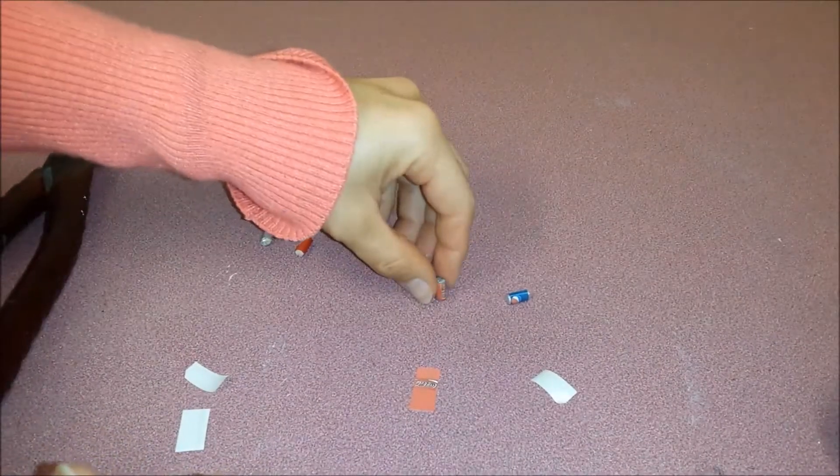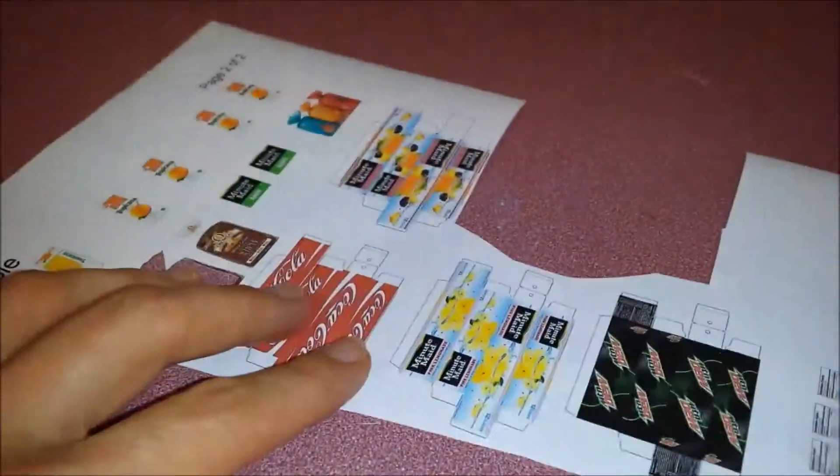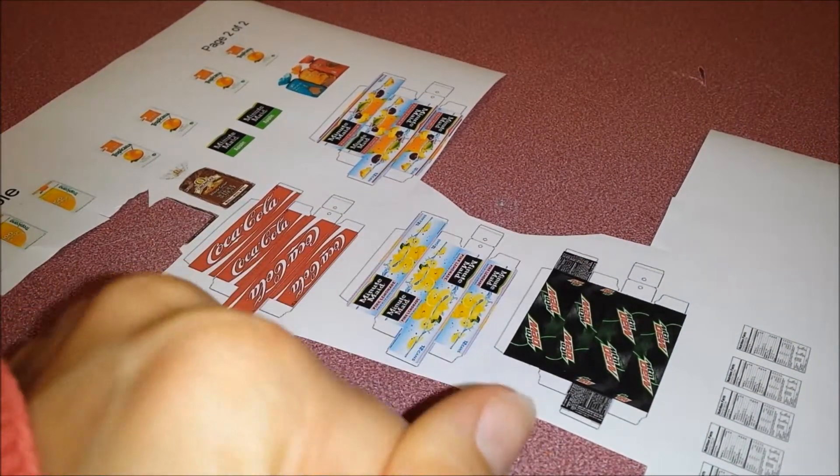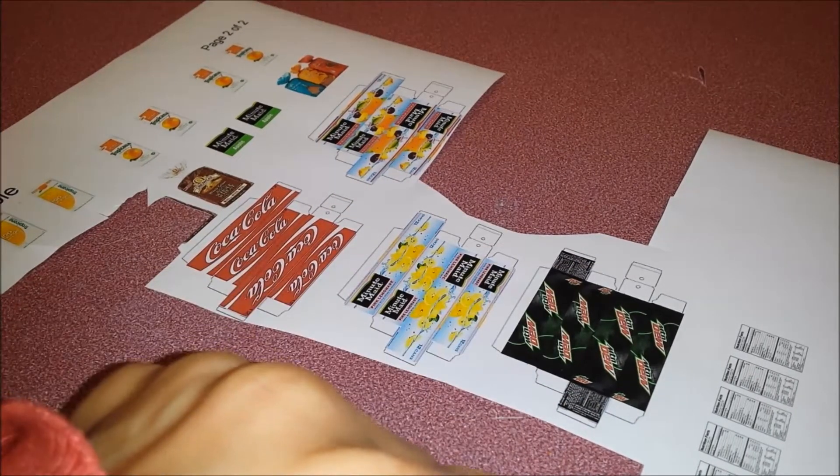You're done and you can make as many as you like. Those ones are actually pretty simple. Just cut them out, and then after I cut this out, I'm going to fold it and glue it on.